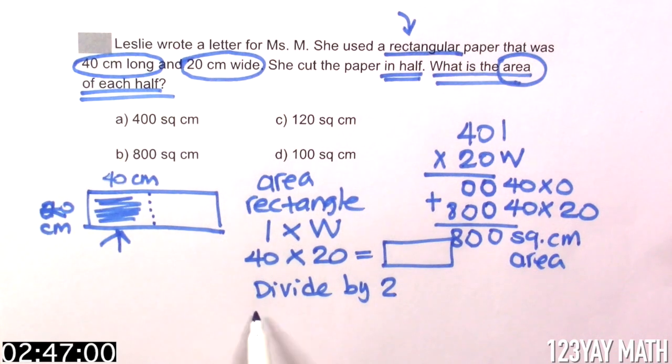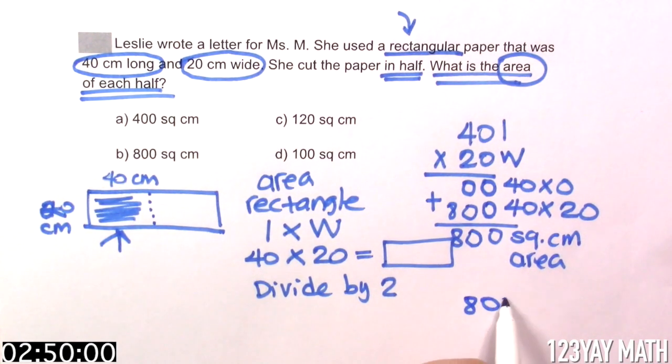No, because we need to divide by 2. So 800 divided by 2.